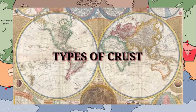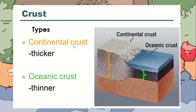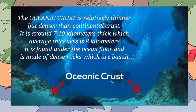We have two types of crust: continental crust and oceanic crust. Continental crust is thicker, while oceanic crust is thinner. The oceanic crust is relatively thinner but denser than continental crust. It is 7 to 10 kilometers thick, with an average thickness of 8 kilometers, and is found under the ocean floor. It is made of dense rocks, which are basalt — so the rock of the oceanic crust is called basaltic.